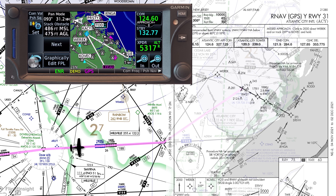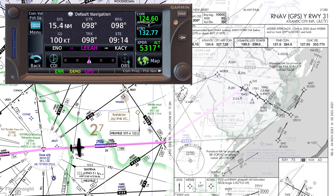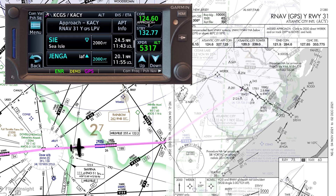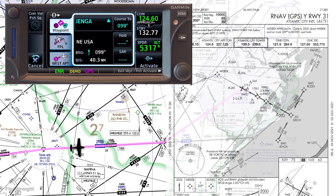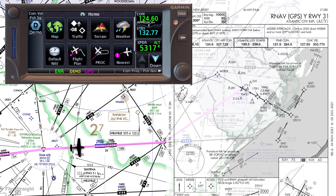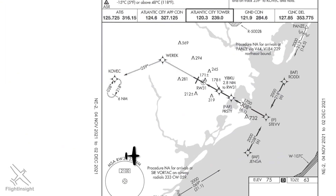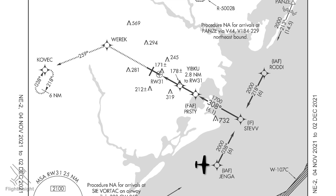ATC tells us to proceed direct Jenga, the initial approach fix. So we go back into flight plan, scroll to Jenga, hit the D button to the right of the screen, and activate it by tapping direct on the screen. On the default nav page we're now direct Jenga. We can now follow the waypoints all the way inbound on the approach.